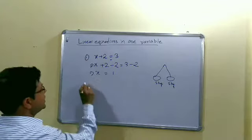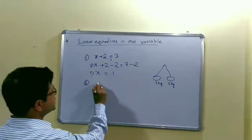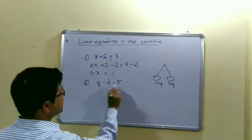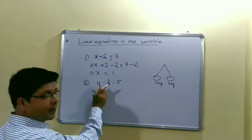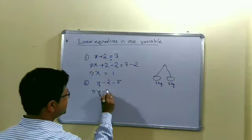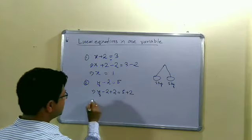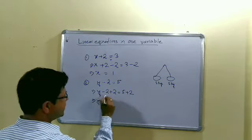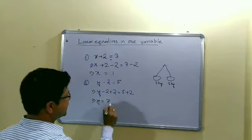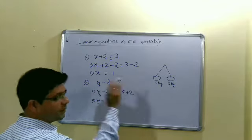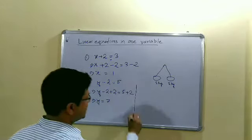In case of subtraction, suppose y - 2 = 5. We want to find the value of y, so we have to add 2. y - 2 + 2, this 2 will get cancelled, equals 7. So when minus sign is shifted, we say that we have to add. Similarly for the other operations.